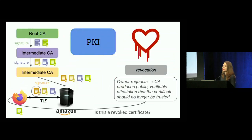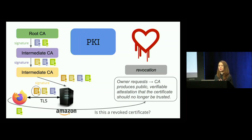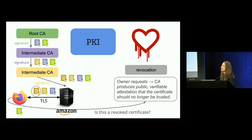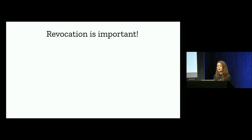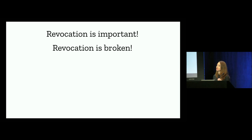What should happen when a private key gets compromised? The corresponding digital certificate should be revoked. The owner of that certificate should request revocation, and the issuing CA should produce a public, cryptographically verifiable attestation that the certificate should no longer be trusted. The onus is on the client to check the revocation status of the certificates it receives. Revocation on the web is really, really important — but revocation in the wild is broken.